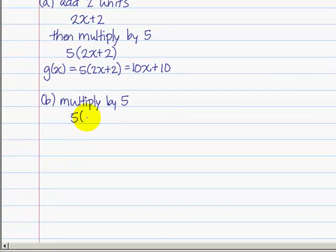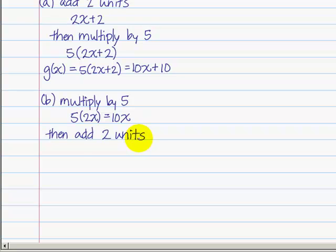So we get 5 times 2x, which is 10x. Then, we add 2 units. This gives us 10x plus 2.